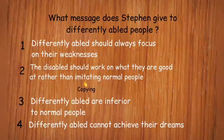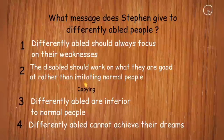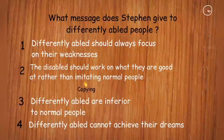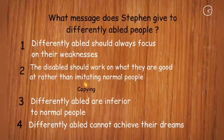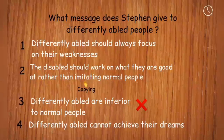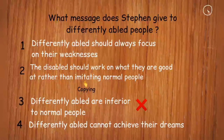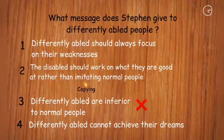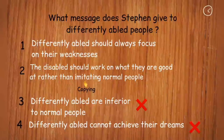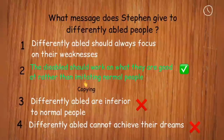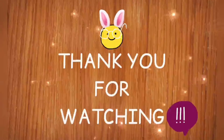What message does Stephen give to differently abled people? The correct answer is that disabled people should work on what they are good at, rather than imitating or copying normal people. Option three, that differently abled are inferior, is wrong as Stephen would never convey such a message. Option four, that differently abled cannot achieve their dreams, is also wrong. It is a person's desire, passion, and persistent hard work that helps attain goals, not their disability.